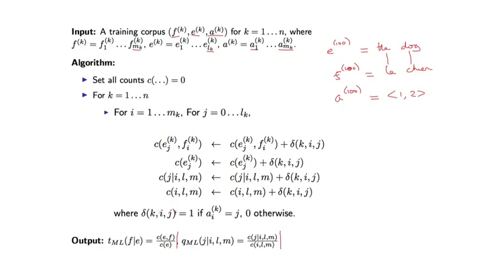The critical definition is these delta variables. So k is the example number, i is a French position, and j is an English position.